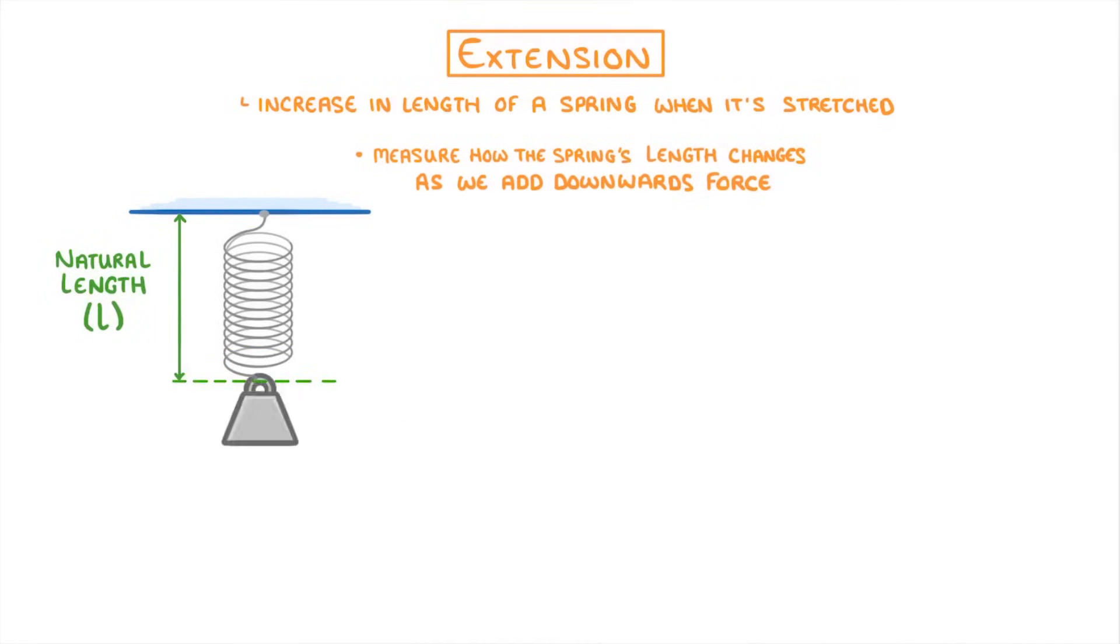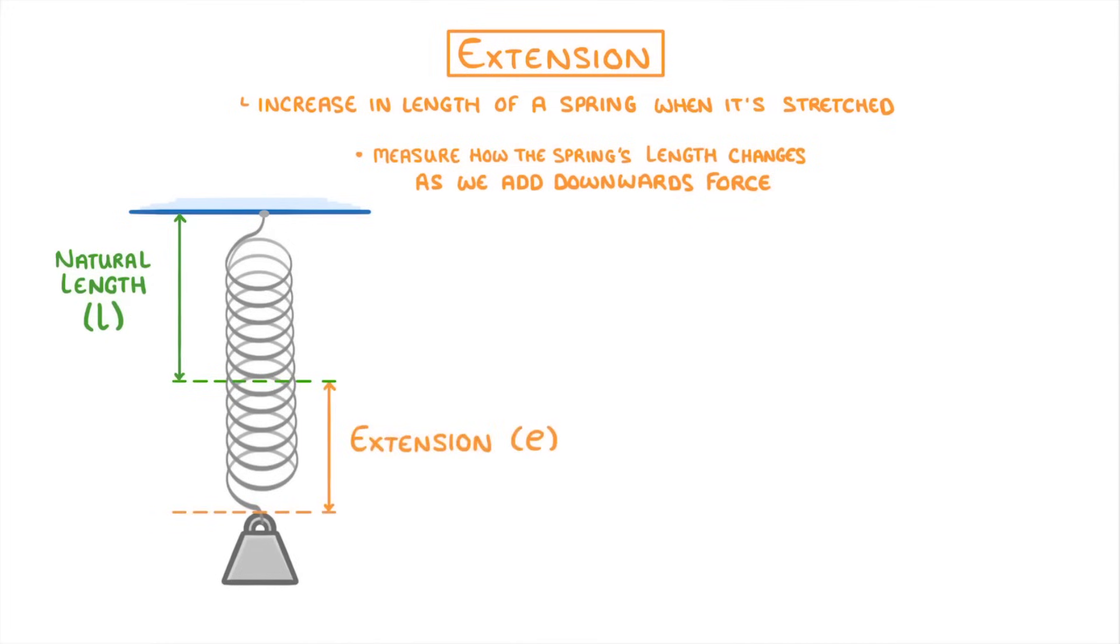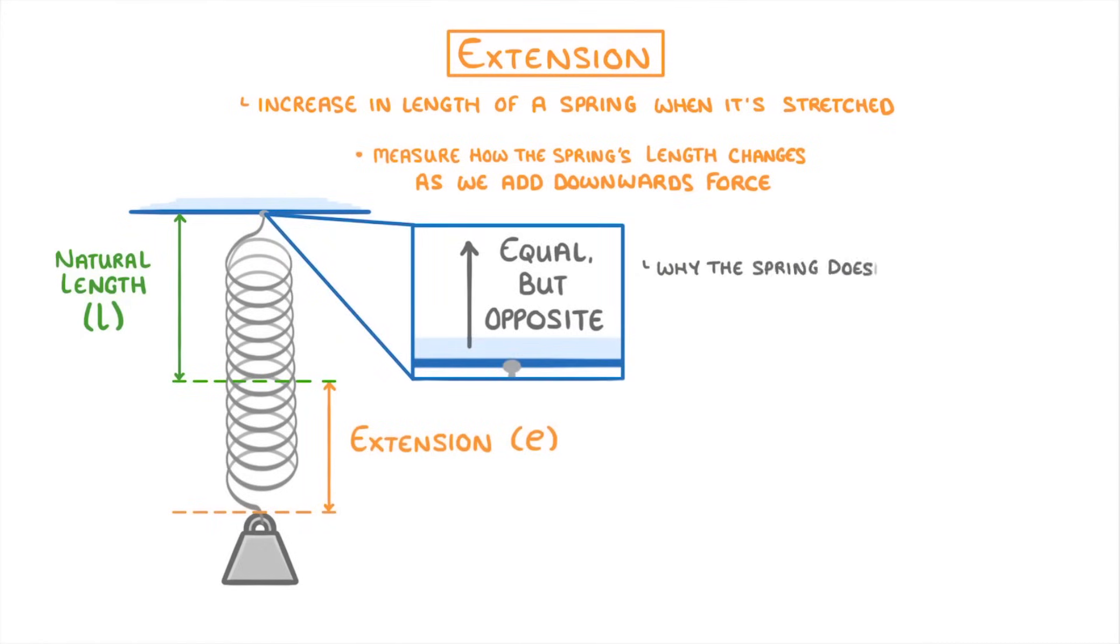If we then add a mass to the bottom of the spring, the weight of that mass will pull on the spring and so increase its length, which we can then measure as the extension. One thing to point out here is that the solid support will also be exerting an equal but opposite force upwards, and this is why the spring doesn't fall down when we add any mass. It's being perfectly balanced by the support.